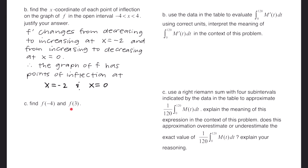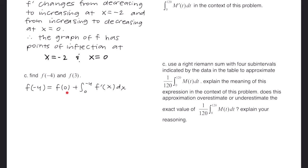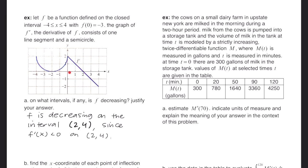Part c asks us to find f of negative 4 and f of 3. Using the initial condition f of 0 equals negative 3, we set up: f of negative 4 equals f of 0 plus the integral from 0 to negative 4 of f prime of x dx. Flipping the bounds brings out a negative, giving us negative 3 minus the integral from negative 4 to 0 of f prime of x dx. This integral is the area under the curve of f prime from negative 4 to 0.